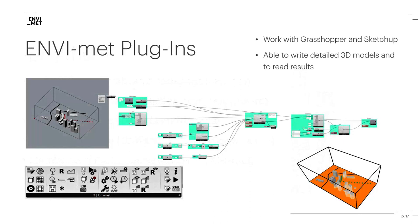Next to the official software suite of EnviMet, there is also a variety of plugins available that allow the user to create EnviMet models within their everyday software. The most famous plugins are added to SketchUp as well as Grasshopper, being a part of Rhino. Those programs are commonly used by architects who usually design their buildings in great detail and want the area of interest to be run in a microclimate model. The plugins now allow them to define their area directly out of their commonly known environment, saving them a lot of time and effort.